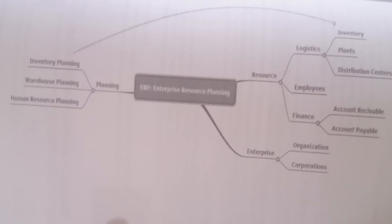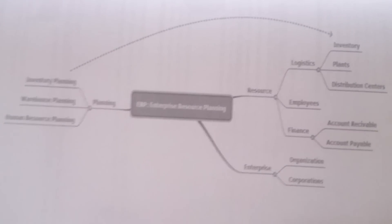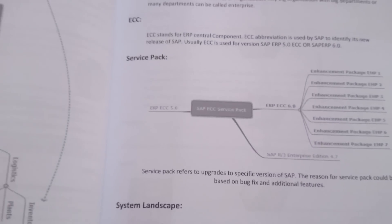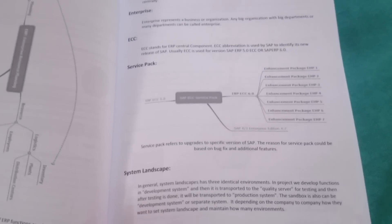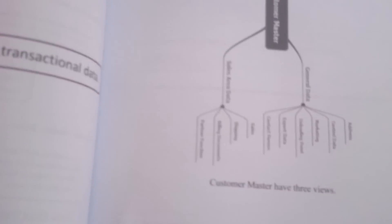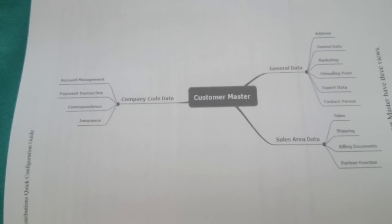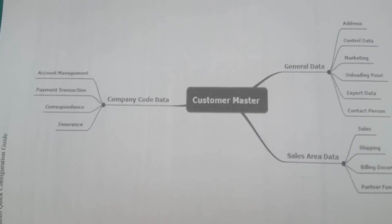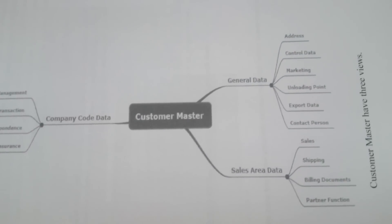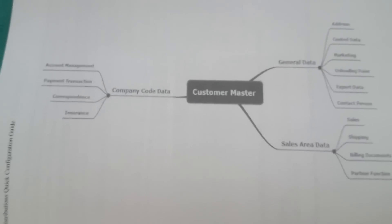The mind map helps you understand the subject faster. This is something new used in the book to simplify topics. Here is another mind map — for customer master. Customer master has three views: general data, sales area data, and company code data. Each of those views has its own respective sections, which simplifies the topic visually.